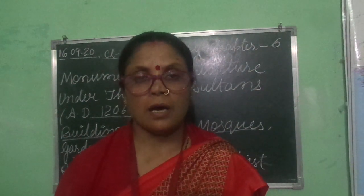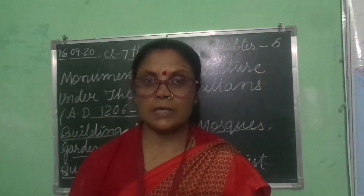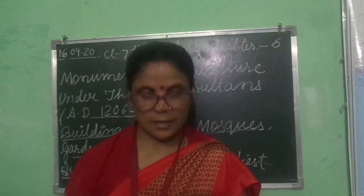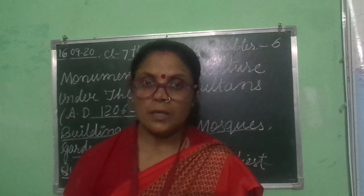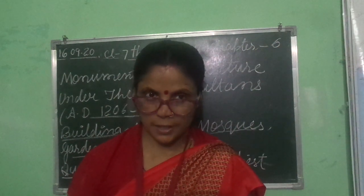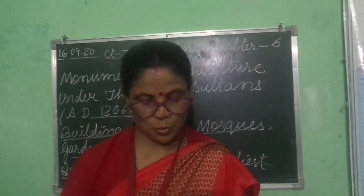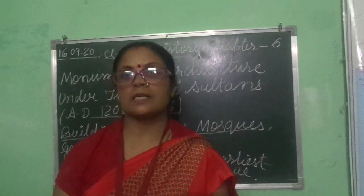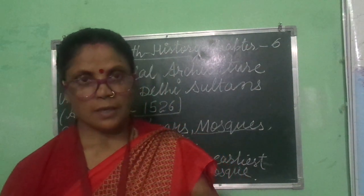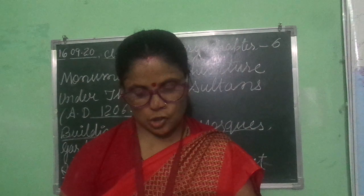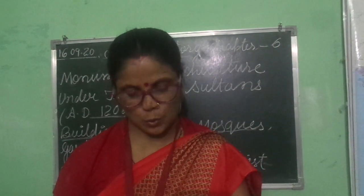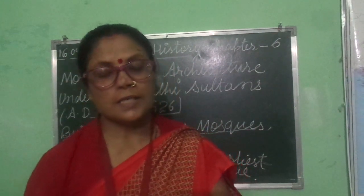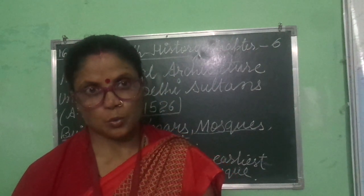The most important buildings during the Delhi Sultanate include the Qutub Minar and the Alai Darwaza in the Qutub complex at Mehrauli near Delhi, Firoz Shah Kotla, Lodi Garden, and Hauz Khas. The construction of the Qutub Minar was begun by Qutub Uddin Aibak but completed by Iltutmish.